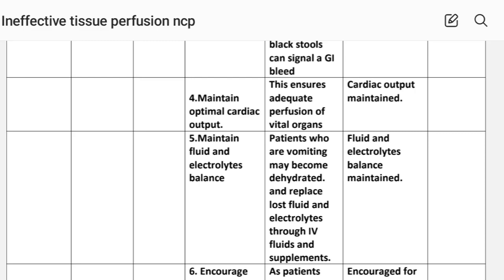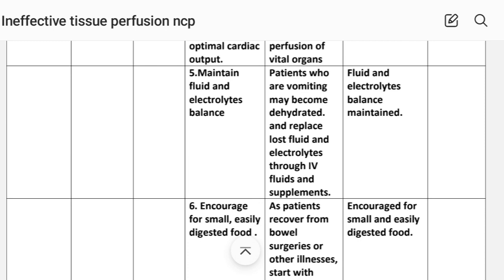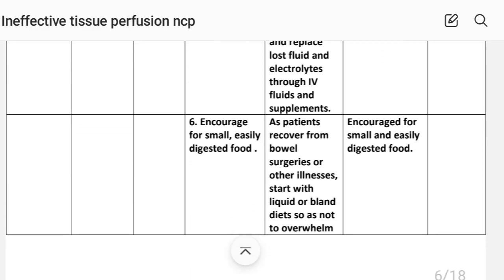Fourth intervention: maintain optimal cardiac output. Rationale — this ensures adequate perfusion of vital organs. Implementation: cardiac output maintained. Fifth intervention: maintain fluid and electrolyte balance. Rationale — patients who are vomiting may become dehydrated and need to replace lost fluids and electrolytes through IV fluids and supplements. Implementation: fluid and electrolyte balance maintained.